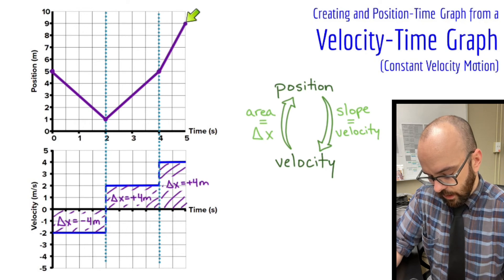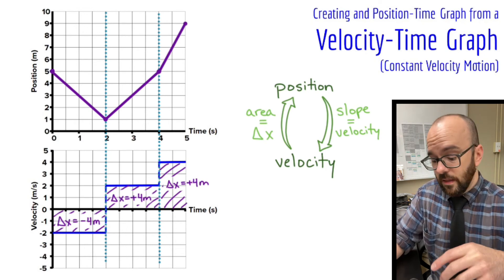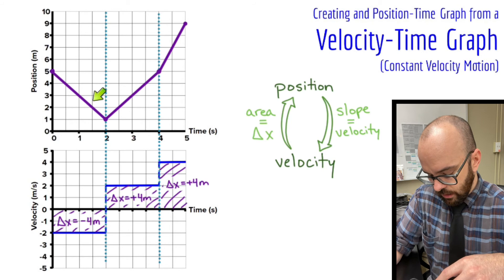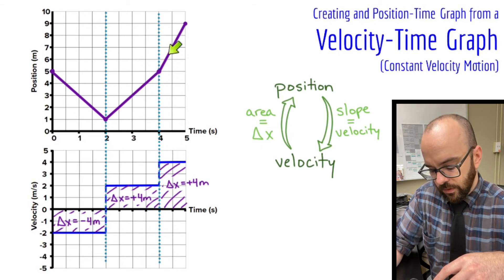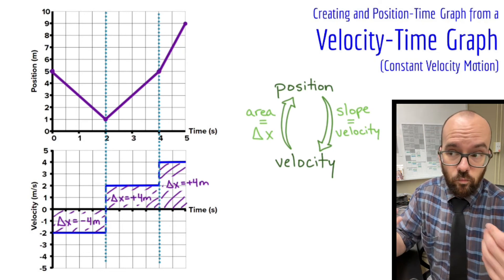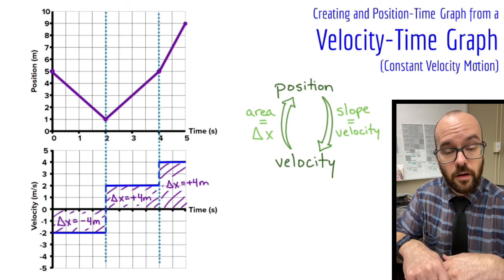I connect those with a straight line, and now I have a position graph that matches my velocity graph. It shows: moving in the negative direction, then changing direction and moving in the positive direction, then suddenly getting faster in the positive direction — which we see with the steeper slope on the position graph. Both graphs describe the same motion, one from the perspective of position and one from the perspective of velocity.